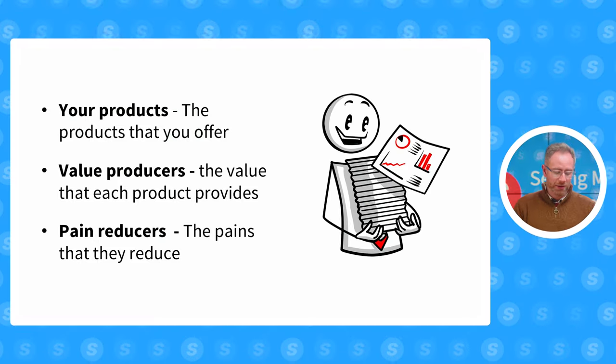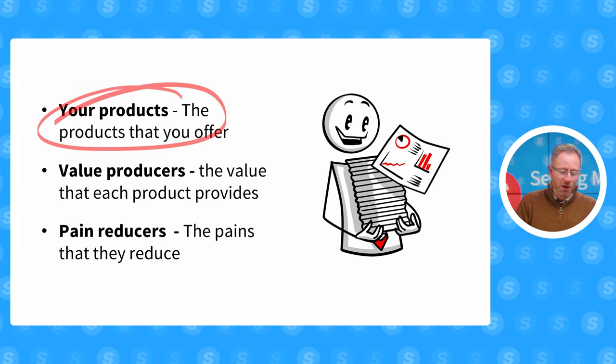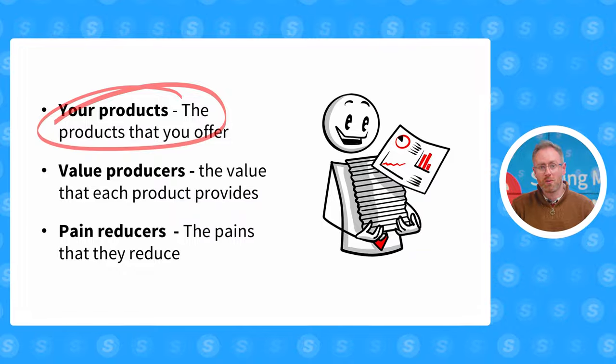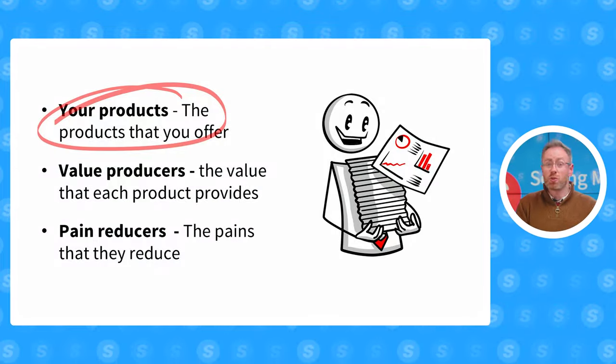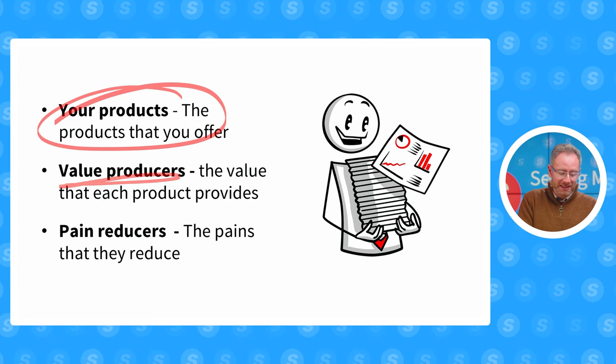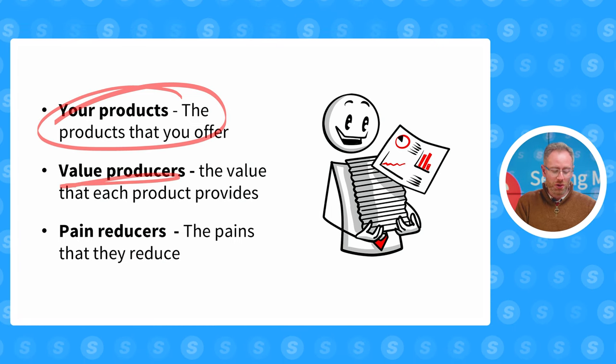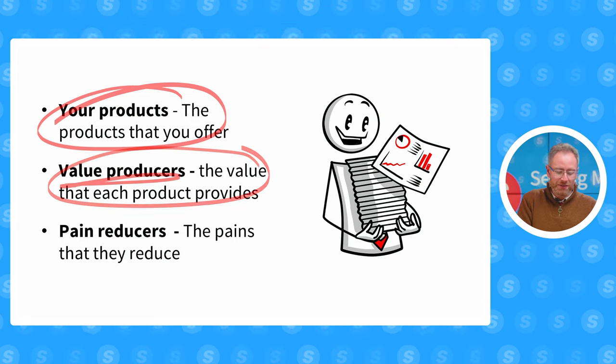So how do we understand the value that we can give to our buyers? Three steps. I want you to list out all of your products — list them out on a page of A4, pen and paper, let's get old school with this. Then for each one of those products, understand and write out your value producer. What is the value that comes from each one of these products when it gets into the marketplace, into the hands of your ideal buyers?